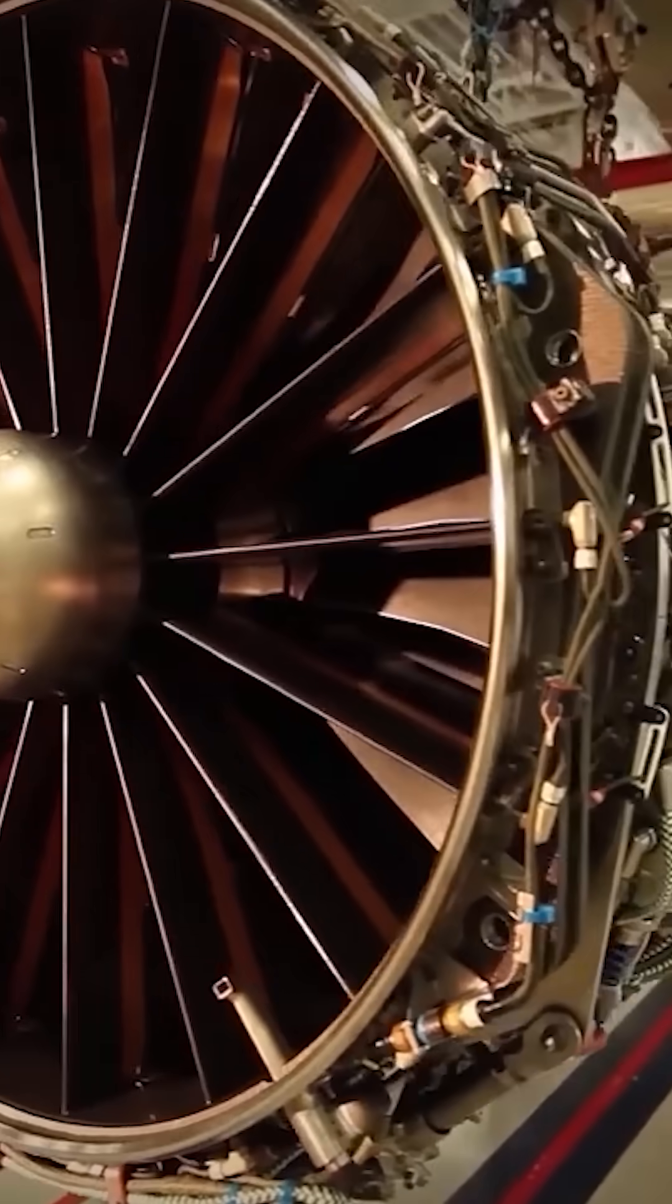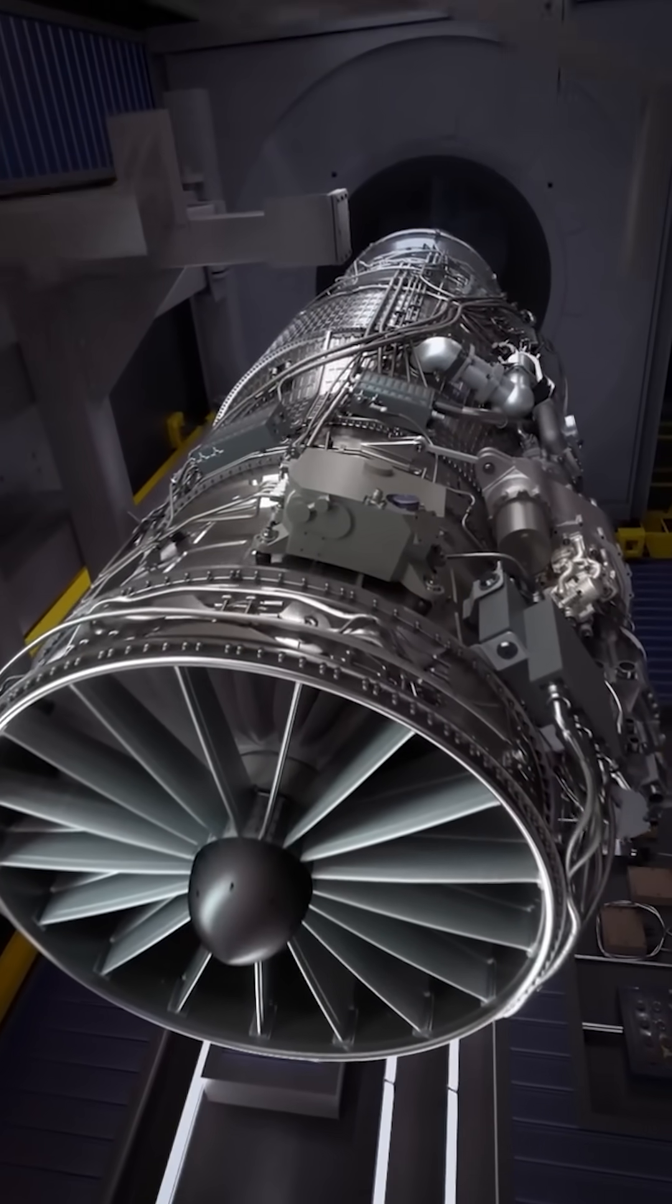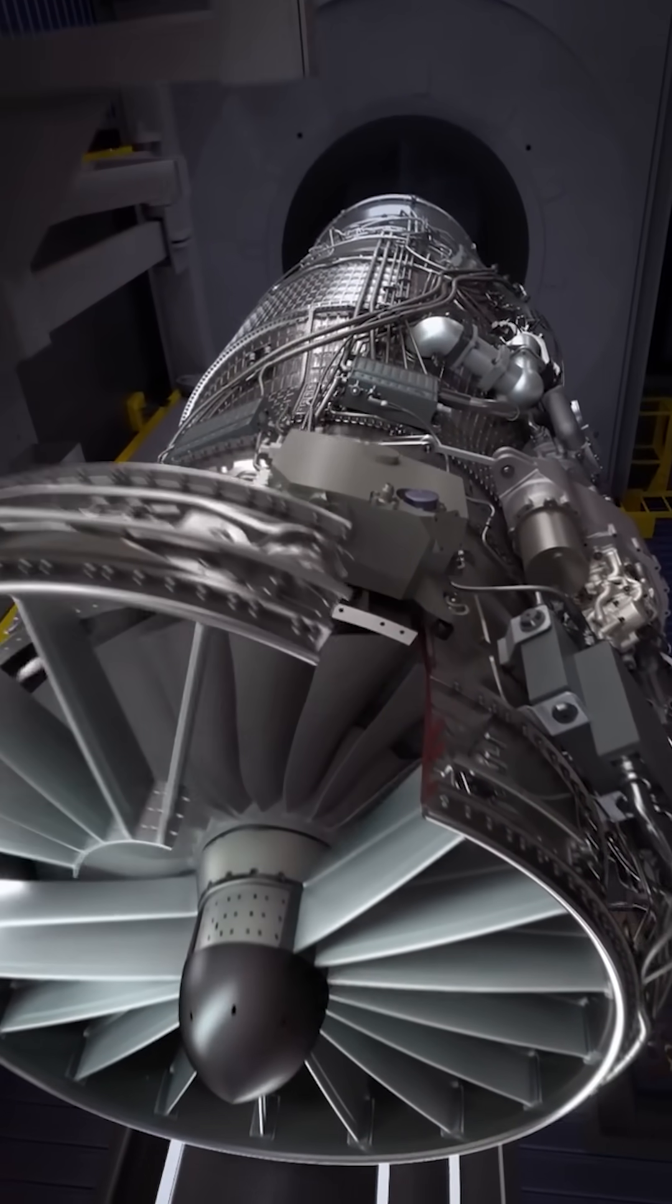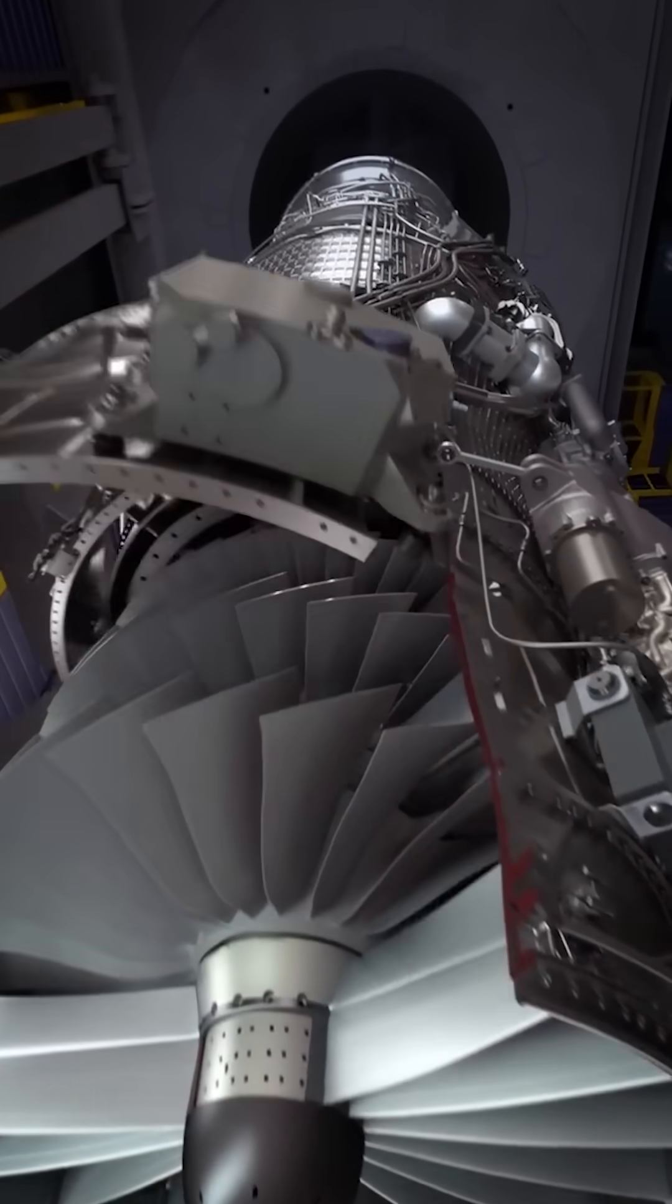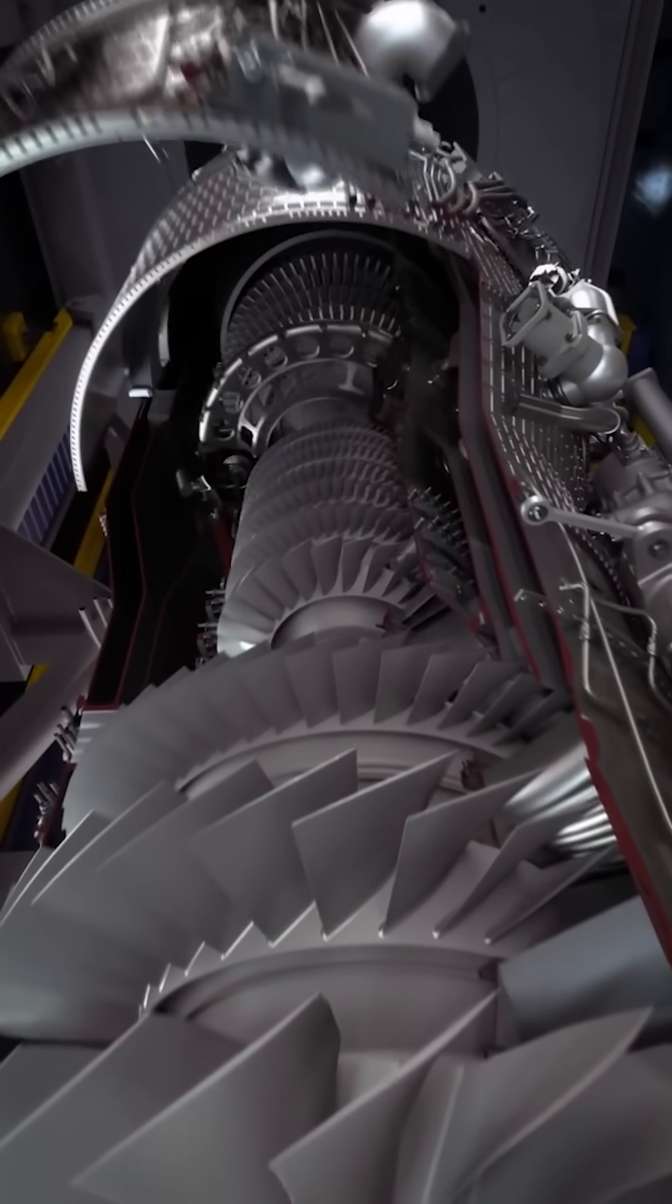But Uncle Sam isn't looking to rest on his engine laurels here, and these new adaptive cycle engines have been in the works since 2022. When I spoke to the folks at GE about their XA-100 prototype a few years ago, they were already reporting a 25% increase in fuel efficiency and as much as a 20% increase in power output over even the F-135.